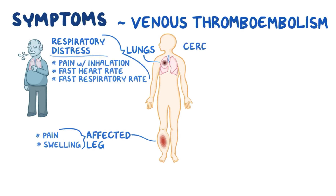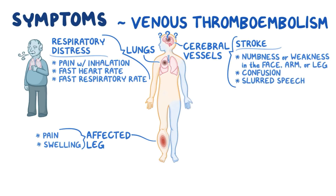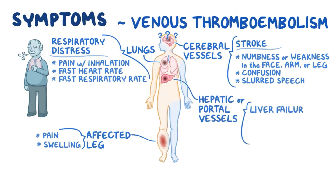If clots get lodged in the cerebral vessels, there may be signs of a stroke like numbness or weakness in the face, arm or leg, confusion, or slurred speech. If a clot blocks the hepatic or portal vessels, there may be signs of liver failure like right upper quadrant pain and jaundice, which is a yellowish pigmentation of the skin and eyes.